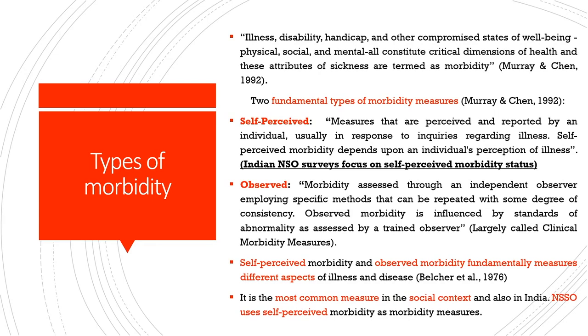In the databases, when collecting morbidity data, we need clarity about how morbidity is understood. One of the most widely used definitions is by Murray and Chen in health economics, where morbidity is defined as illness, disability, handicap, and other compromised states of well-being — physical, social, and mental. There are two fundamental types of morbidity measures: self-perceived morbidity and observed morbidity.